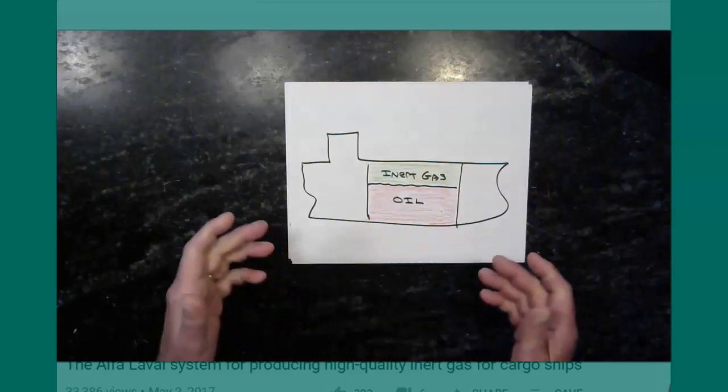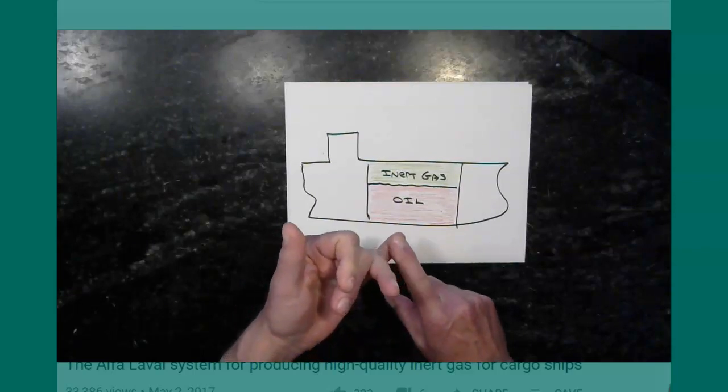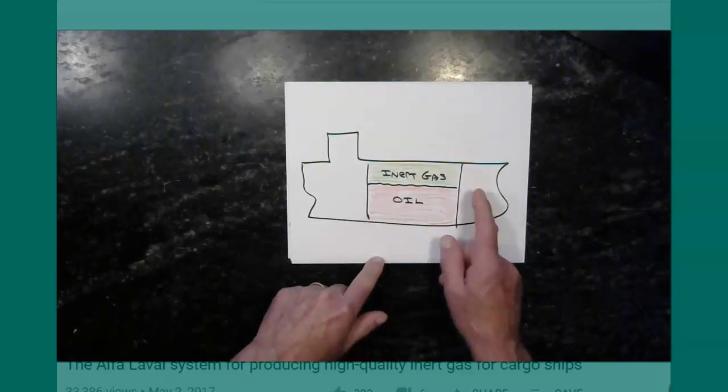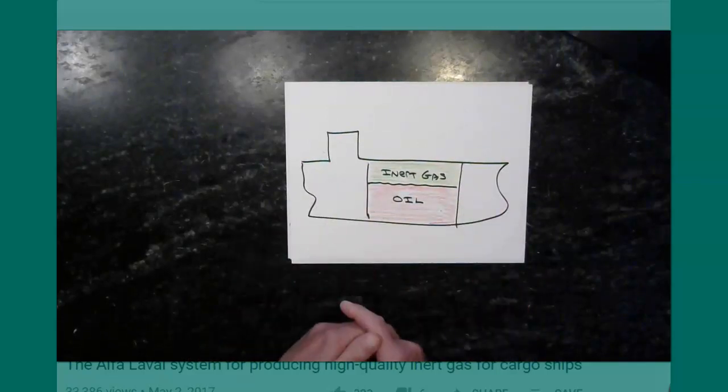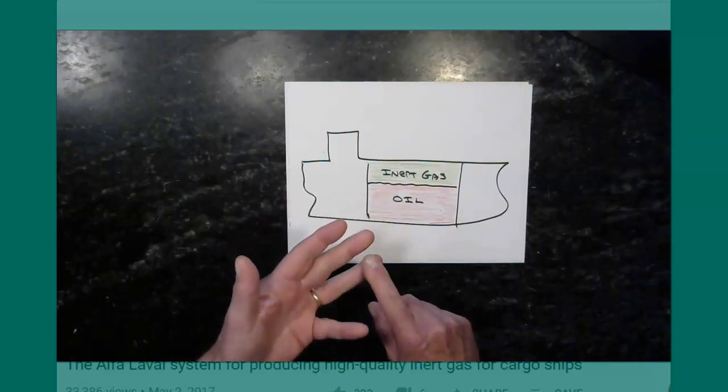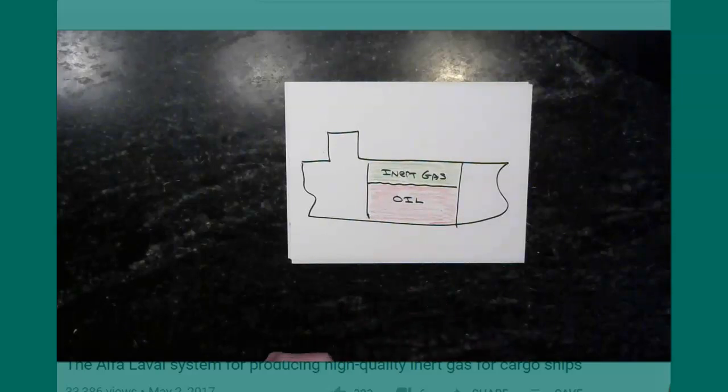We can get that particular thing out of the way, and now we have a much safer ship. This is done - inert gas is done whenever you have a really big tank like on a tanker. Now this is a one-tank ship, that's not realistic, but whether you're carrying a product or crude oil, you're going to be using inert gas, and it's part of that piping system.